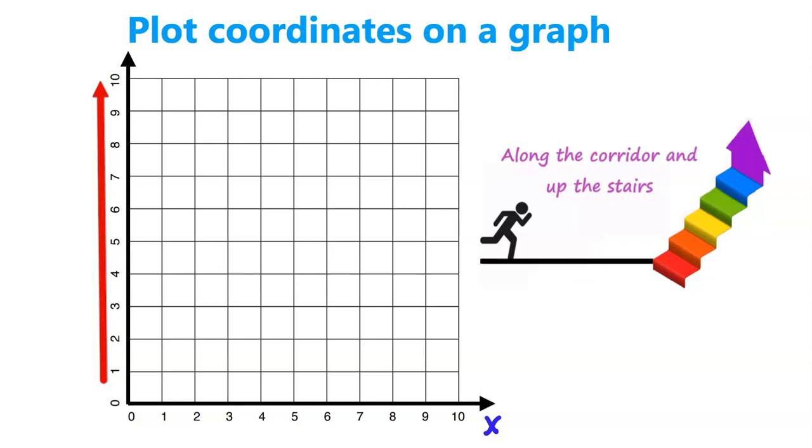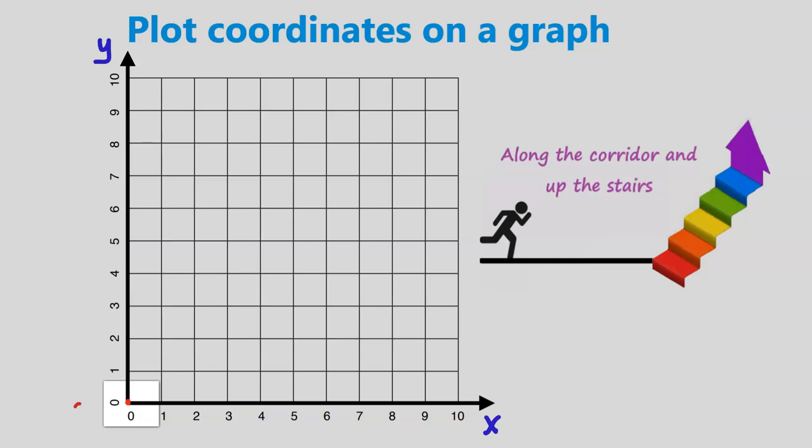And we've got the vertical axis going up from 0 to 10, and that is the y-axis. The point at which the two axes meet is called the origin. The origin's coordinates are (0, 0), and remember to enclose that in brackets.